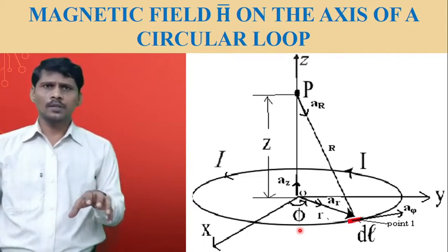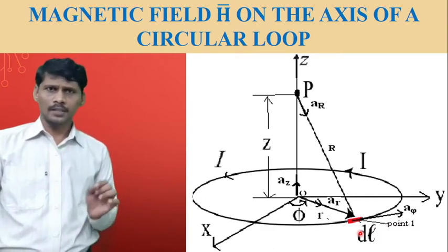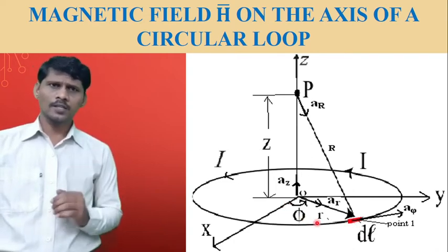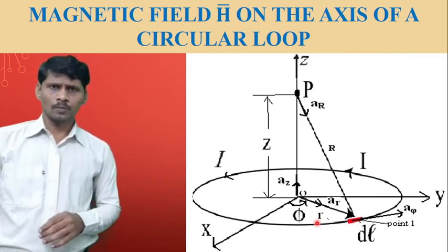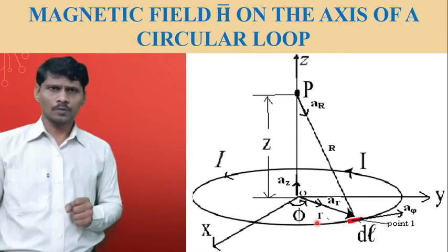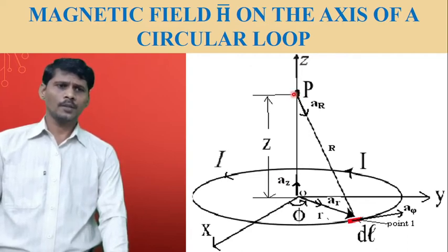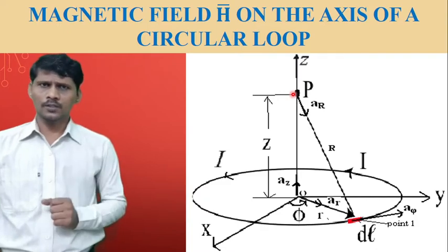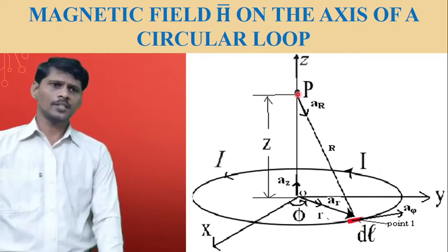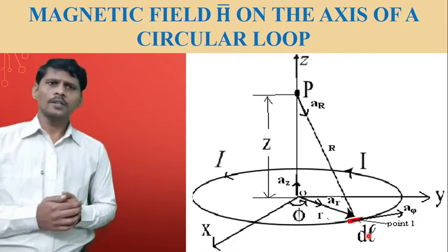At any point on the circular loop, consider the point v1. At that point v1, dl bar is the differential vector length. Draw the line from the origin to the point v1; at point v1, dl bar corresponds to the radius of the circular loop. The magnetic field intensity is calculated at point P on the z-axis at a distance z meters from the origin. The distance from the differential element to point P is capital R, and A suffix capital R bar is the unit vector in that direction.